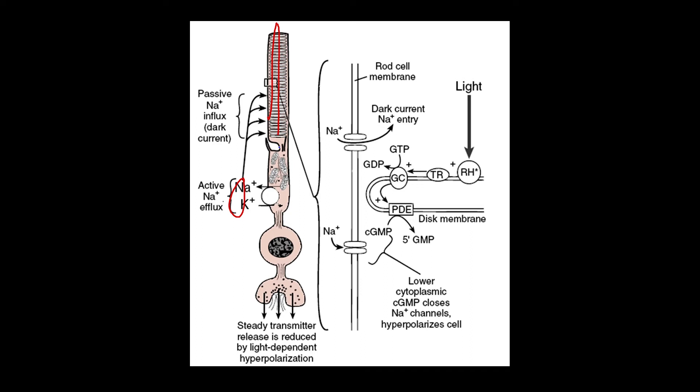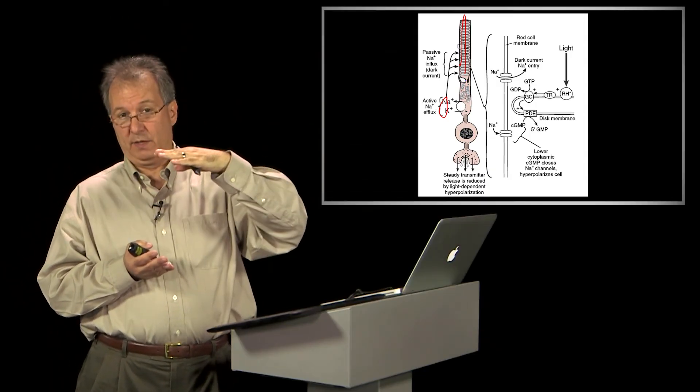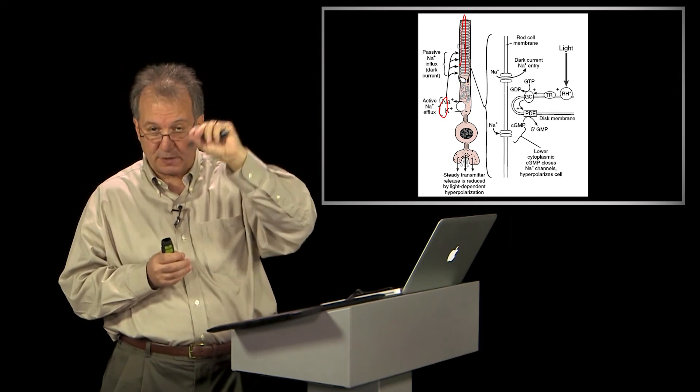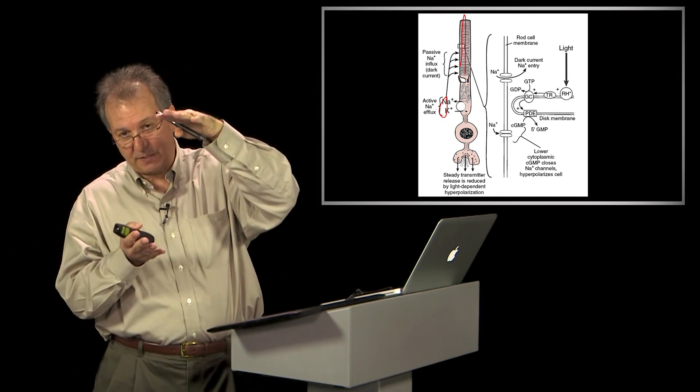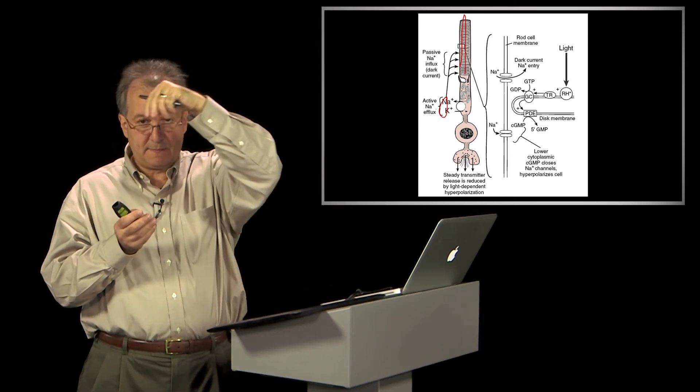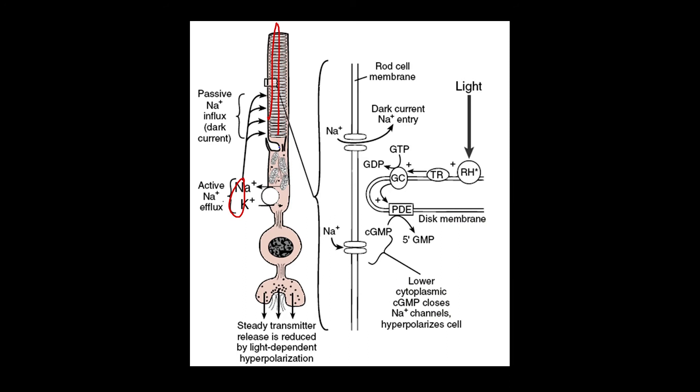So they start to change more. And how bleached they are is sort of how adapted they are. So when they're not bleached at all, a very small amount of light now coming in will change it. After you've bleached them a bit, now you're operating at a different light level. In fact, there were studies that were done showing that a single photon can make a change in the cell that this system can detect, which is just remarkable.